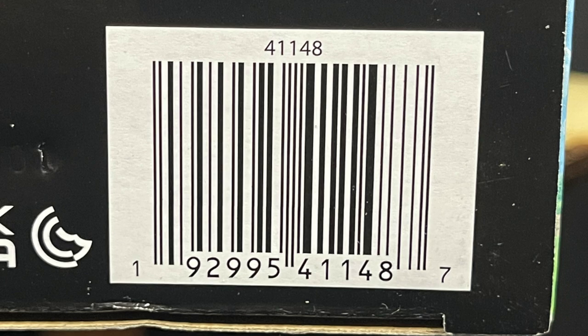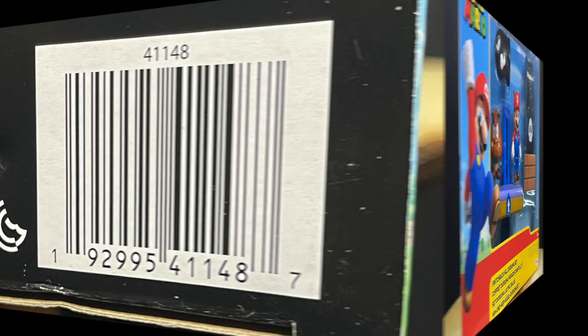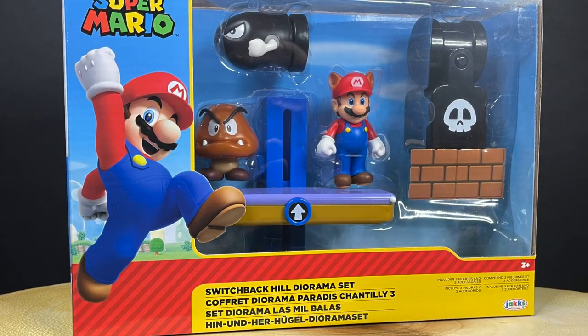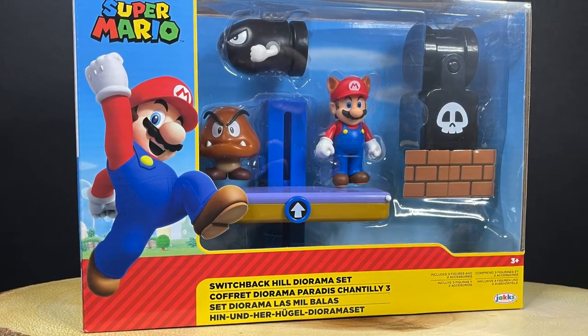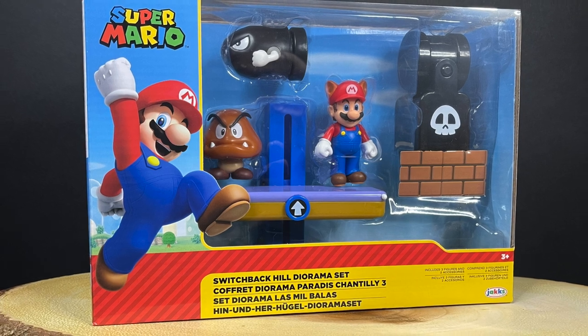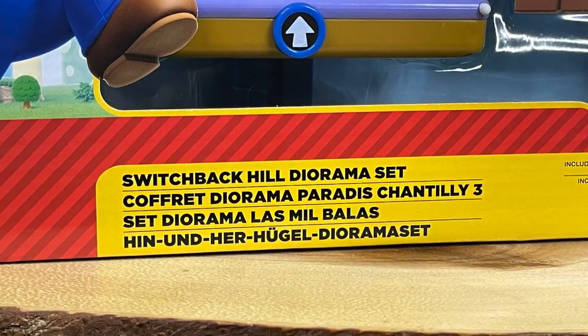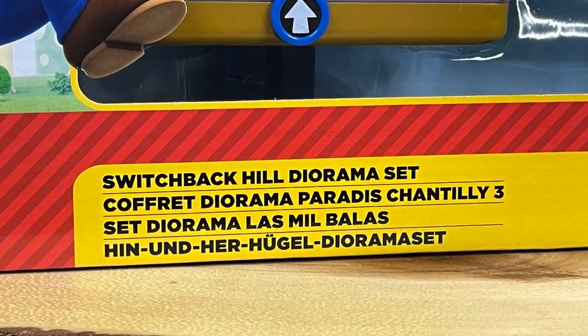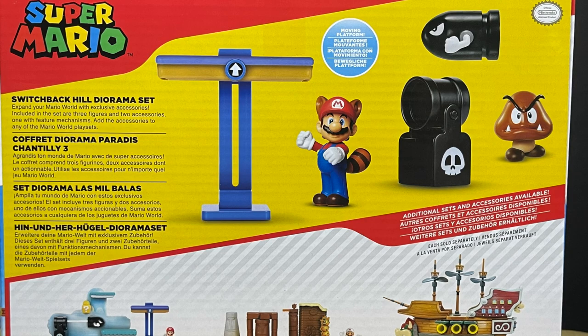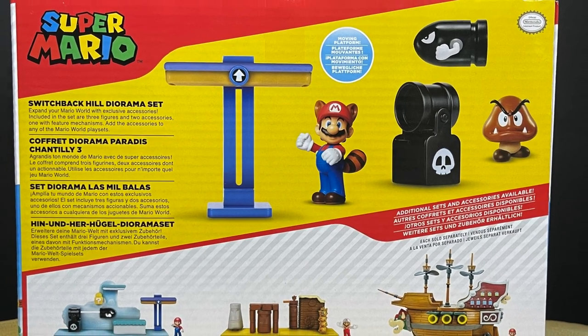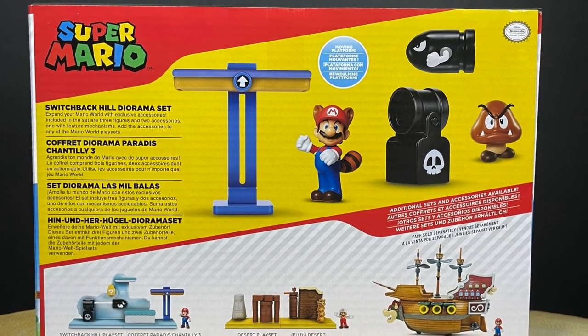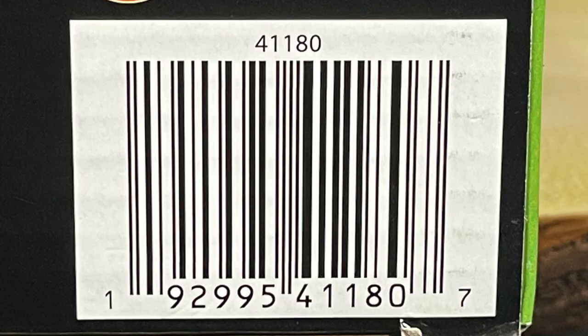But here is the barcode for the playset if you'd like to go out and find it, have an employee scan it. And then of course also the Switchback Hill diorama set. These are basically add-on accessories packs to really build out the world of your Super Mario shelf, and they do a fantastic job. On this set I'll share some thoughts, I have a few qualms here and there, usually it's pretty straightforward but I have some minor suggestions, and of course here is the barcode as well.